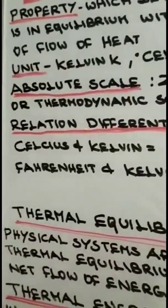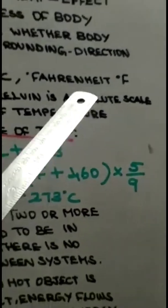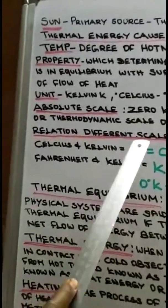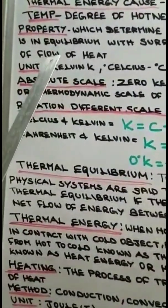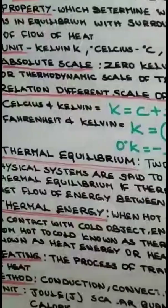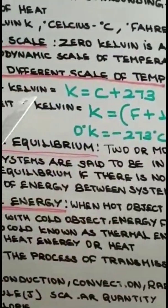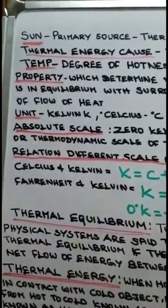This thermodynamic scale of temperature is defined as the fraction of 1 by 273.16 part of the thermodynamic temperature of triple point of water. Next we will see the relation between the different scales of temperature. The different units are Kelvin, Celsius, and Fahrenheit. So temperature is measured in Kelvin, Celsius, and Fahrenheit.